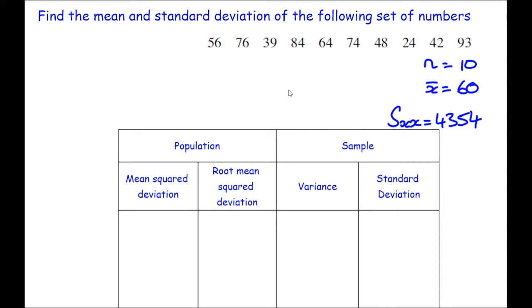Colloquially, the mean squared deviation is sometimes called the variance, and colloquially, the root mean squared deviation is sometimes called the standard deviation. Be extremely careful which one your question has asked you for.